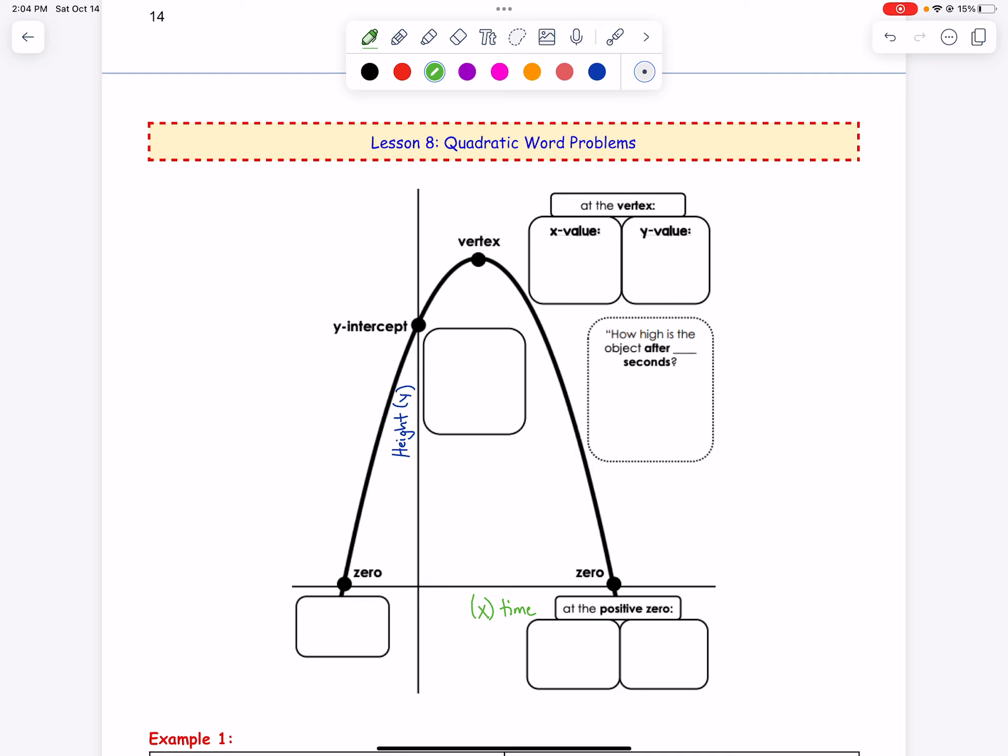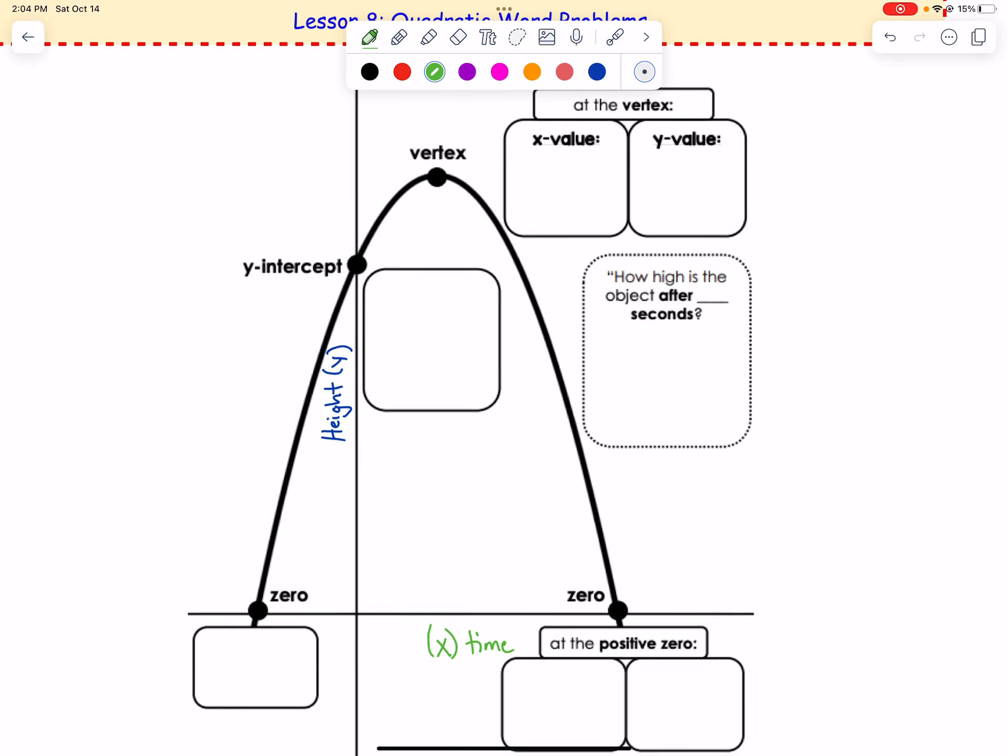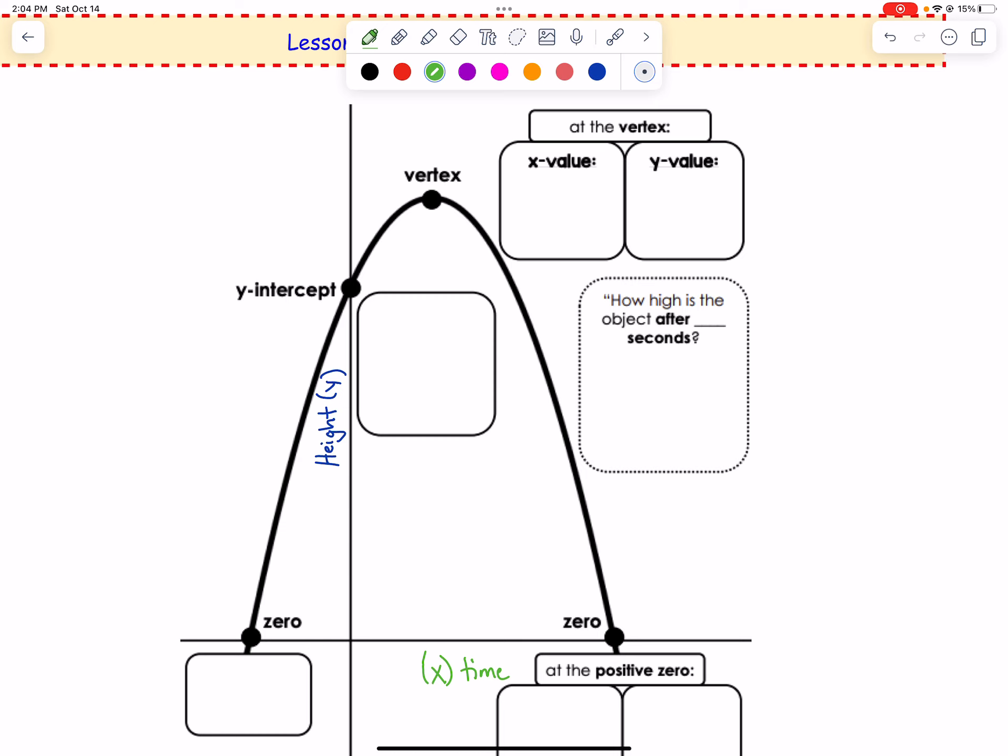Let's label some specific parts of our graph and what they're going to tell you. For your y-intercept, that's usually your initial height at time 0. Because that's what a y-intercept is—it's where x equals 0, which is our time, and that's usually your starting point of something that's at a certain height.